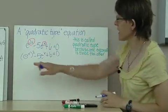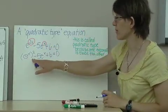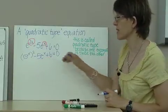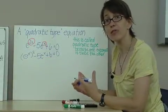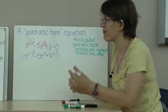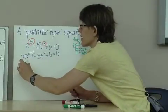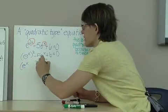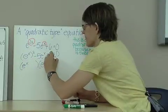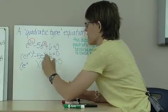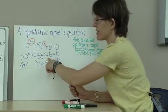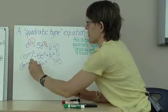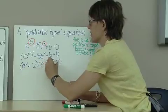So now I have something squared minus 5 times that same something plus 6 equals 0. I can factor this expression. My factors will begin with e to the x power. And I need things that multiply to make positive 6 and add to make negative 5. There they are.